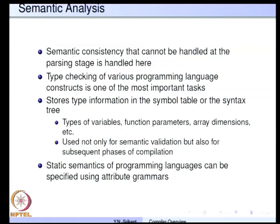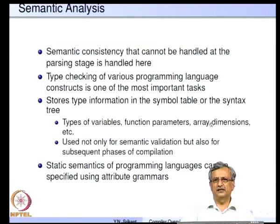Semantic consistency that cannot be handled at the parsing stage is handled here — type checking of various programming language constructs is one of the most important tasks. A semantic analyzer also stores information in the symbol table or the syntax tree itself. Each node of the syntax tree can store information: what are the types of variables (int, float, struct, array), what are the types of function parameters, and what are the dimensions of arrays. This information is stored by the semantic analyzer in the symbol table.